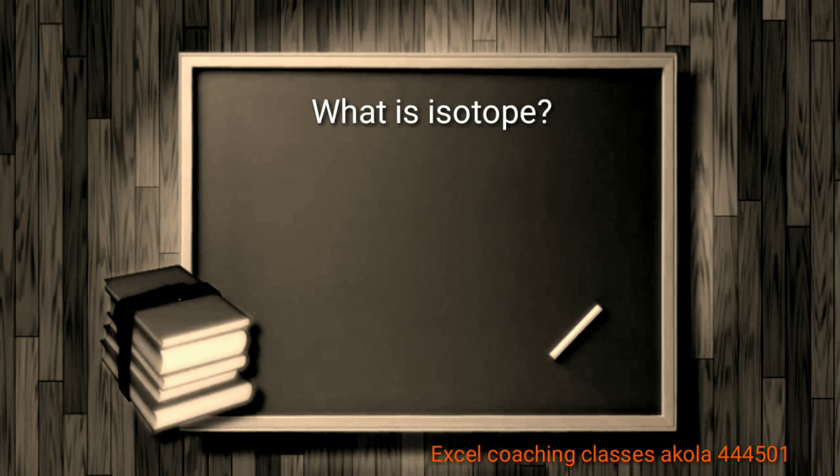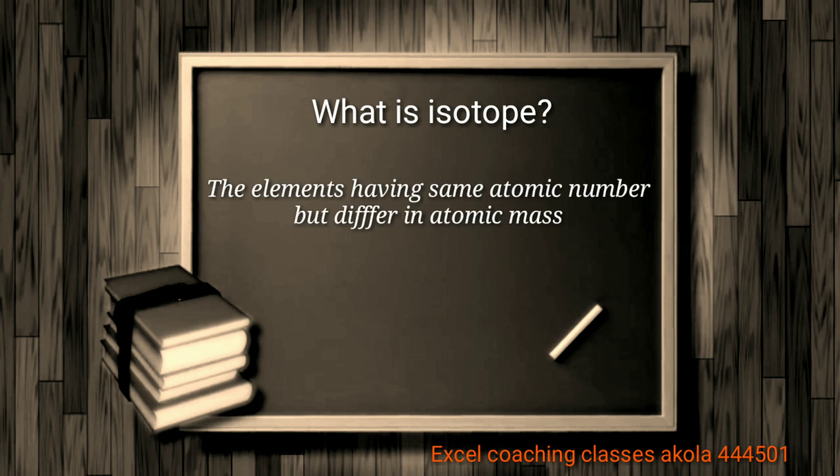What is the third question? Isotopes: elements having the same atomic number but different atomic masses are called isotopes. For example, carbon-12, carbon-13, and carbon-14. Their atomic number is the same (6), but their mass numbers are 12, 13, and 14 respectively.